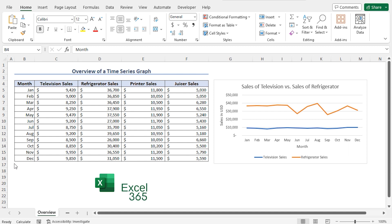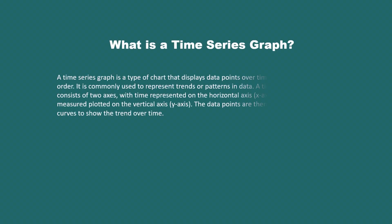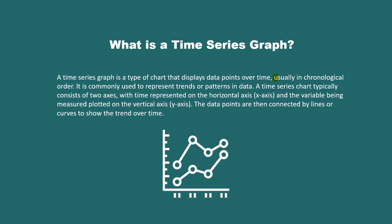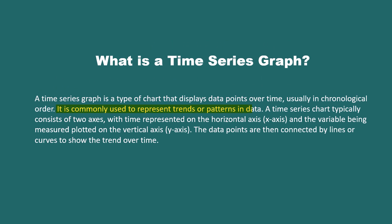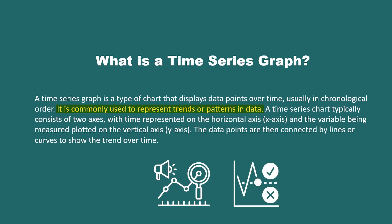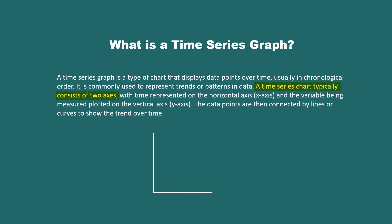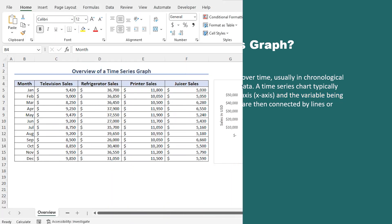For this video, I'll use Microsoft Excel 365. Let's quickly refresh our idea about the time series graph. A time series graph is a chart that displays data points over time, usually in a chronological order. It is commonly used to represent trends or patterns in data. A time series chart usually consists of two axes, with time on the horizontal axis (the X-axis), and the variable being measured plotted on the vertical axis (the Y-axis). The data points are then connected by lines to show the trend over time.